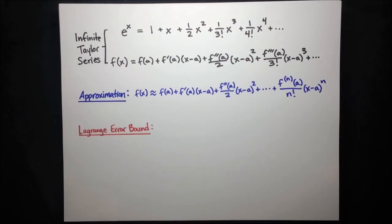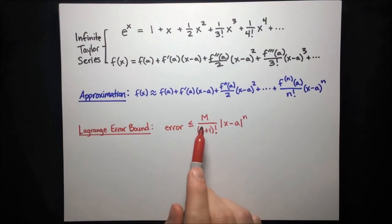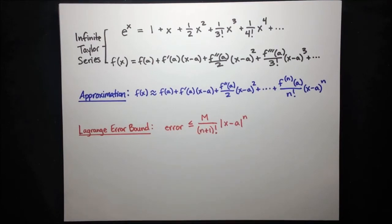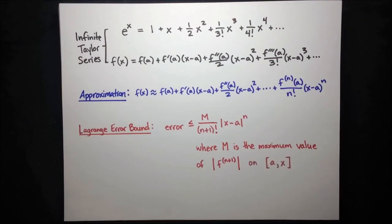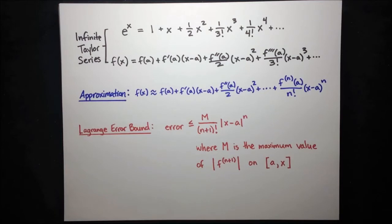The Lagrange error bound tells us that the magnitude of the error has to be less than or equal to an expression that's very similar to the next term in the series, except where the n plus first derivative would usually go in the top of the fraction, we have an M. M stands for the maximum value of the magnitude of the n plus first derivative on the entire interval from a to x. You may have done numerical examples and seen that Taylor polynomials can be pretty good estimations, and you may have even proved the Taylor series formula. But I've never found that entirely satisfying — how could somebody even come up with this series in the first place? You don't just magically think of a series with all these cool properties without some sort of prior intuition.